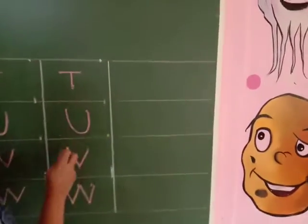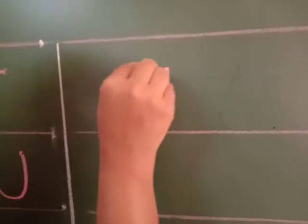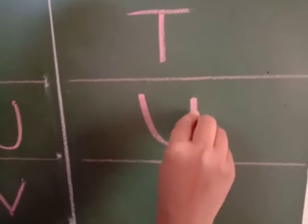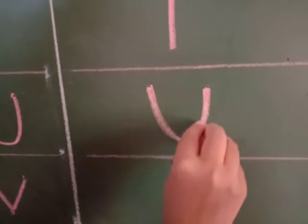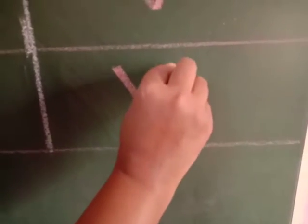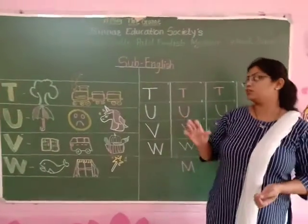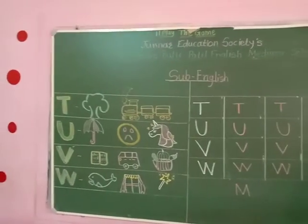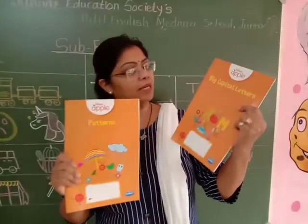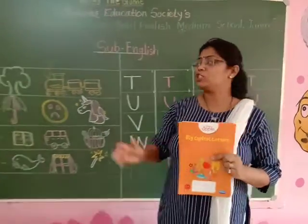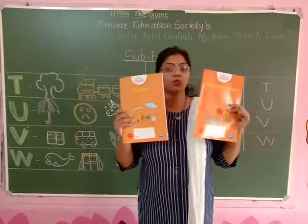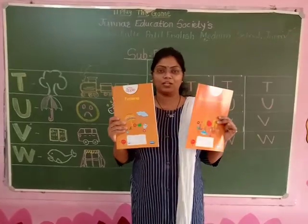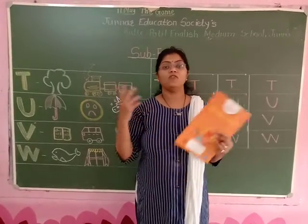Students, you have to do practice with the help of dots and also using strokes — standing line and sleeping line makes T, one half upside curve makes U, one slanting line and another slanting line makes V, and slanting down, up, down, up makes W. Today's homework: you will write these letters using dots and strokes. Also, you will complete both books — patterns and big capital letters — up to what I have taught. I am waiting for your photos of homework. Bye-bye, kids!